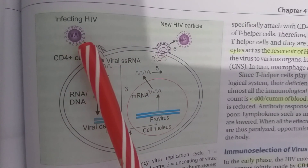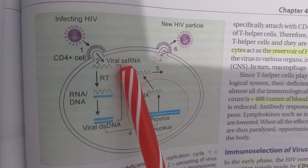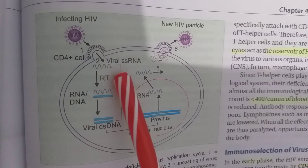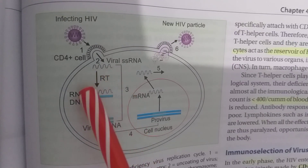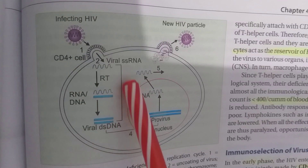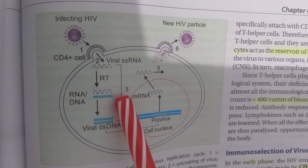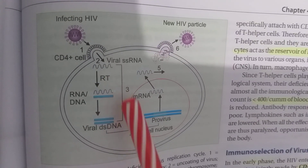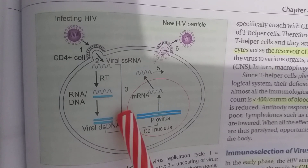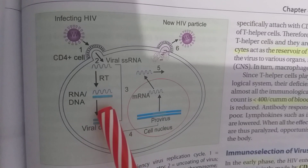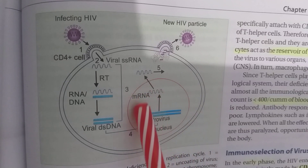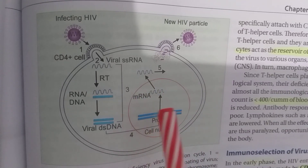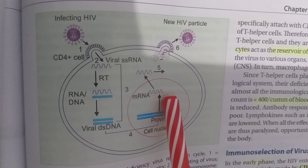After virus entry, the single-stranded viral RNA is converted with the help of polymerase enzyme into a minus DNA strand. This minus DNA strand then creates a positive (plus) DNA strand, together forming the double-stranded viral (proviral) DNA.